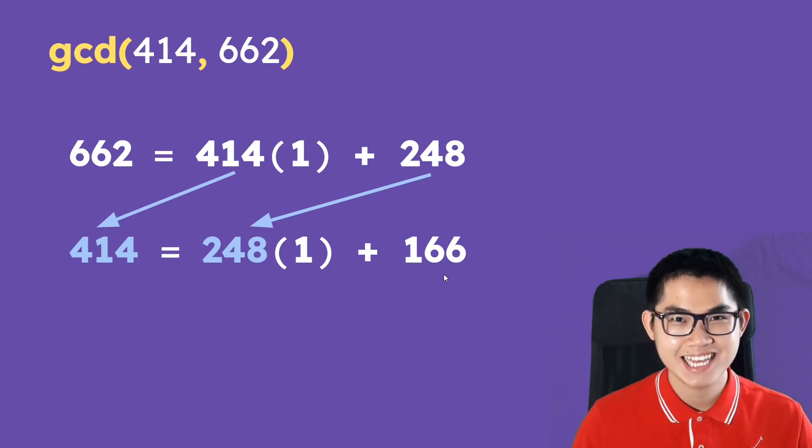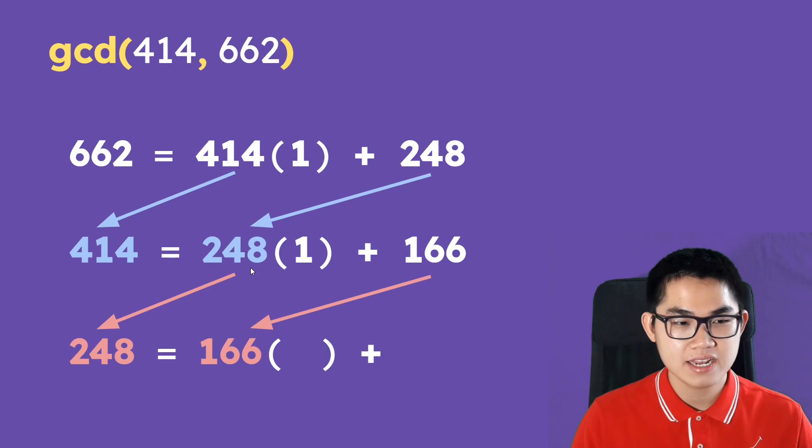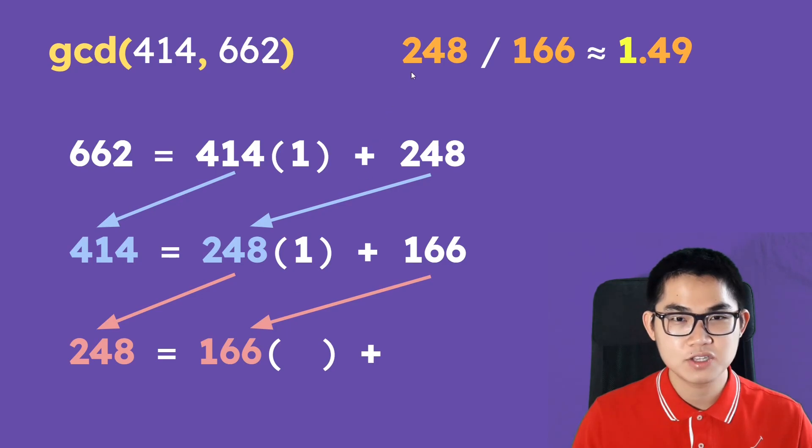Repeat this process, so take 248, drop it down here, and take 166 and drop it down here. And then take 248 divided by 166, that gives you approximately 1.49. Take number 1, fill it in here, and then find the remainder which is 82.